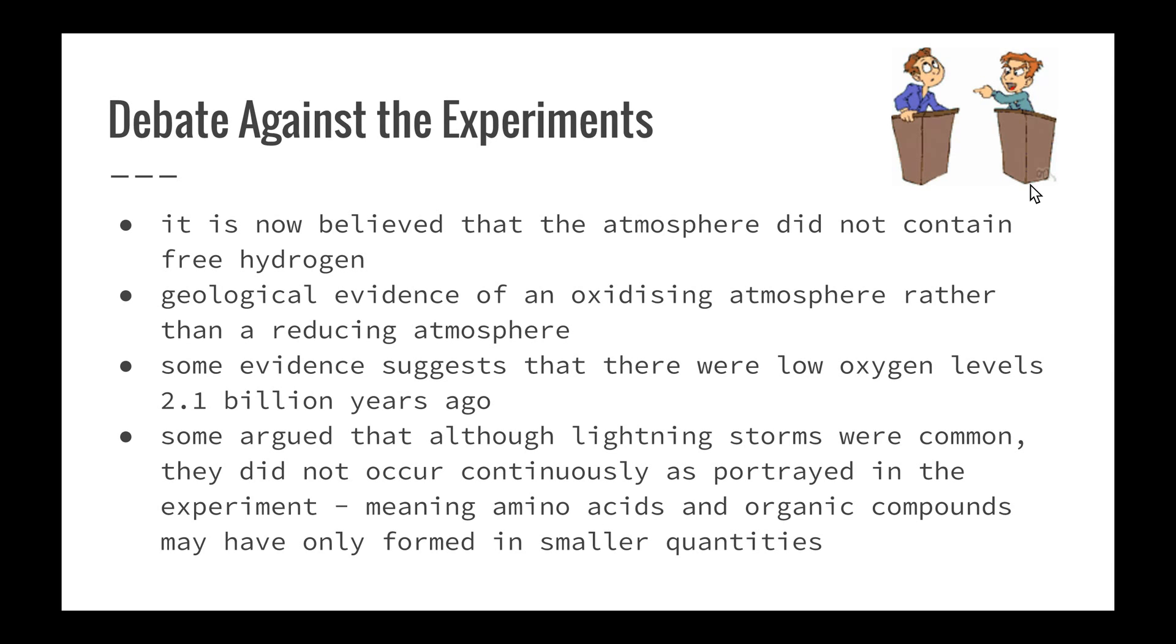Geological evidence of an oxidizing atmosphere, rather than a reducing atmosphere, existed to show that there must have been some kind of free oxygen somewhere in the atmosphere. This ties in with the fact that some evidence suggests that there were low levels of oxygen 2.1 billion years ago. Some argued that although lightning storms were common, they did not occur continuously like they were in their experiment, meaning that amino acids and organic compounds may only have formed in smaller quantities and not in the amount required to actually form life.